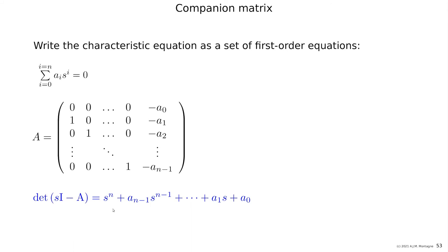Remember that the poles were the solution of this equation equals zero. If you recognize this expression, the determinant of sI minus A, then you probably recognize the eigenvalue problem. So the eigenvalues of A are the poles of the system.